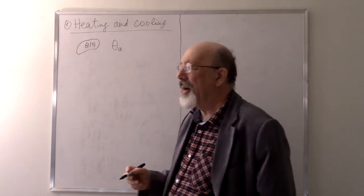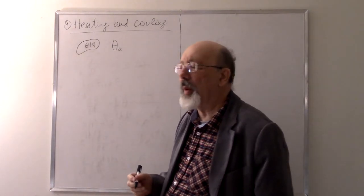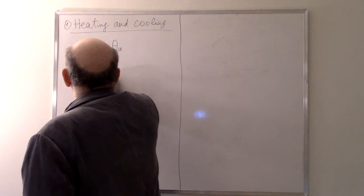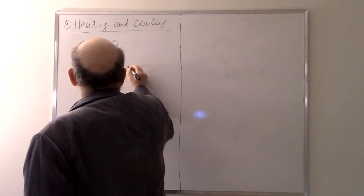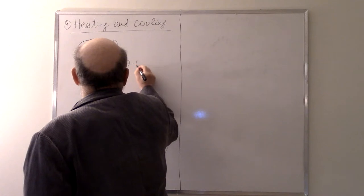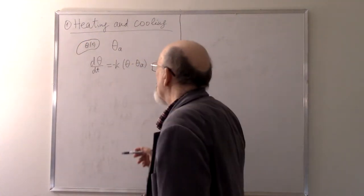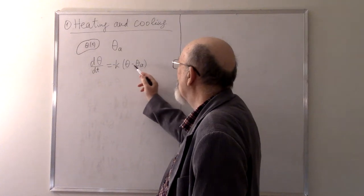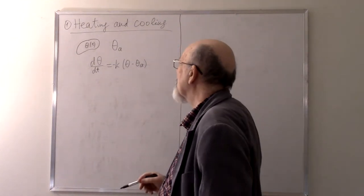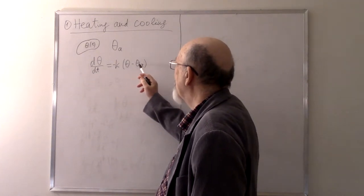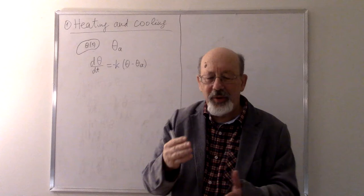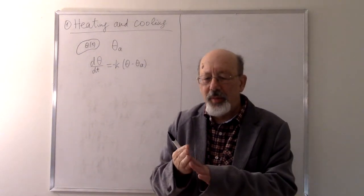This temperature is described by Newton's equation: dΘ/dt = -k(Θ - Θ_A). The sign is correct because if Theta is greater than Theta_A, the difference is positive but the temperature should decrease, so there is a minus sign. If Theta is less than Theta_A, we get a plus. In both cases, the temperature difference has a tendency to decrease.